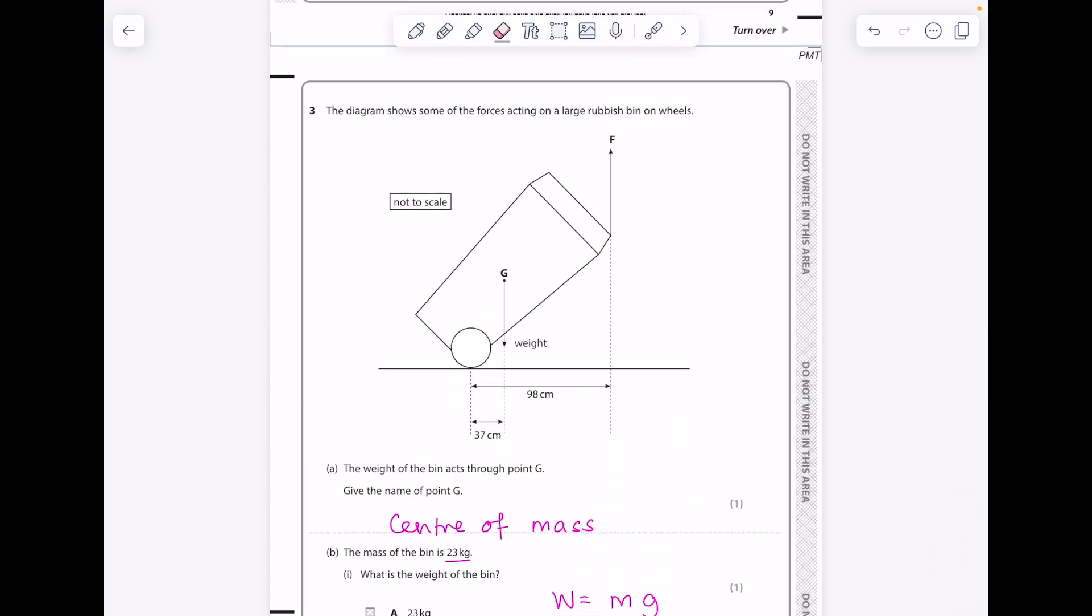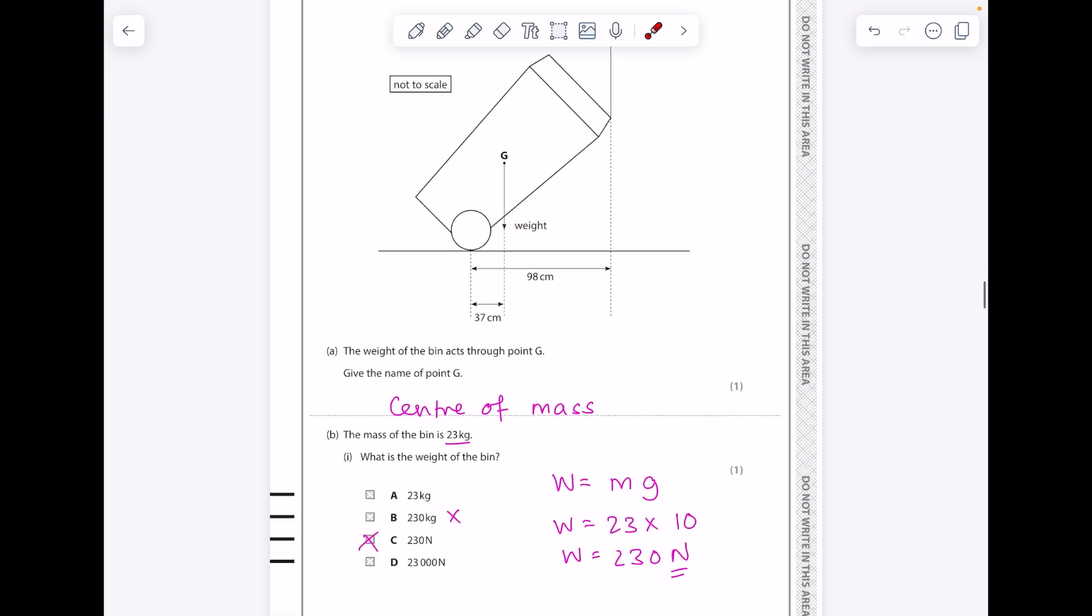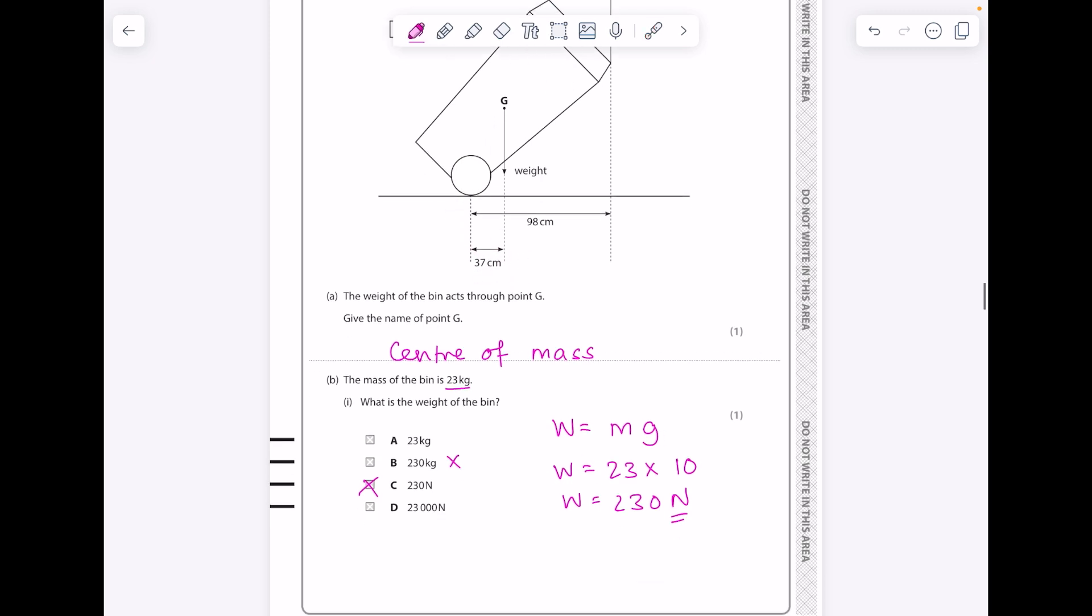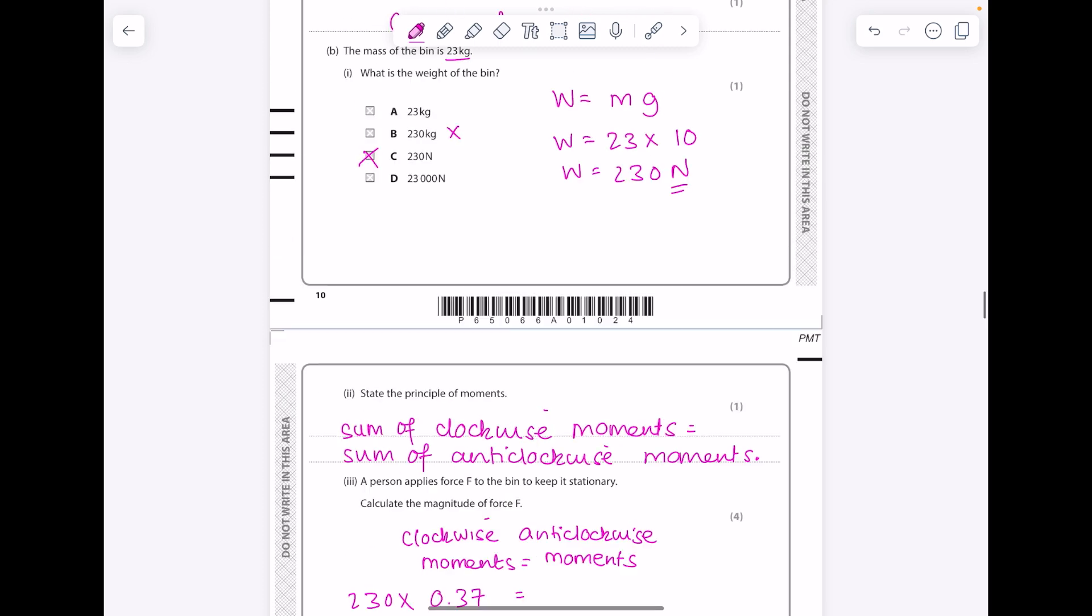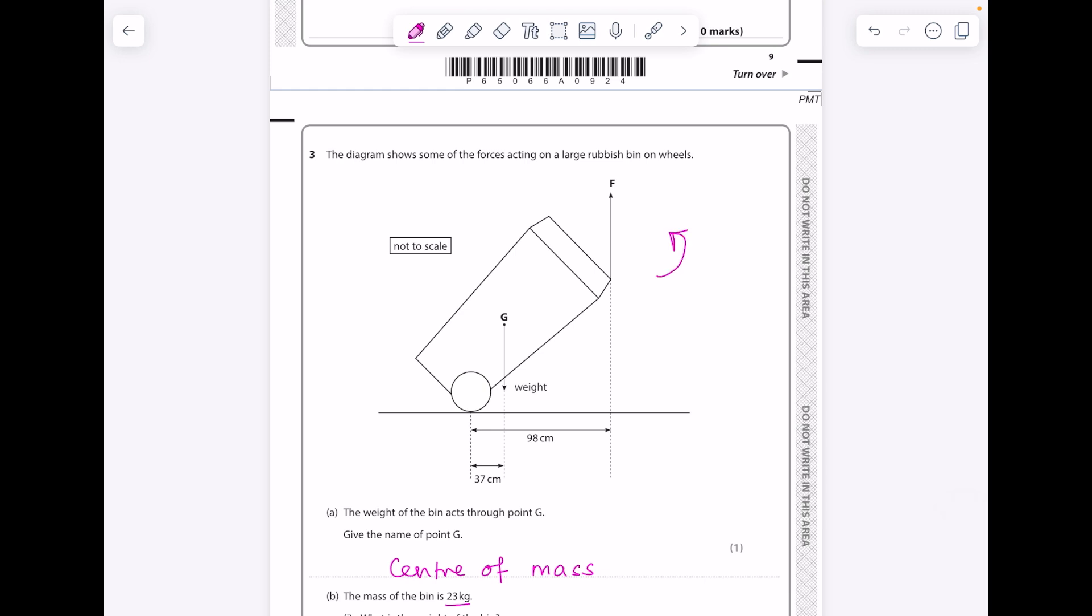Please write down clockwise moments equals anti-clockwise moments. Let's work out the clockwise moment. Moment is given by force times distance, so you need to work out which moment is creating a turning effect that's acting clockwise. It will be G. So it will be, if moment is force times distance, it will be that force we just found out, which was 230 newtons, multiplied by the distance. Just be a little bit careful here with units - it needs to be in meters. So our clockwise moment is 230 times 0.37 meters.